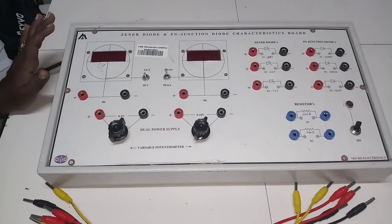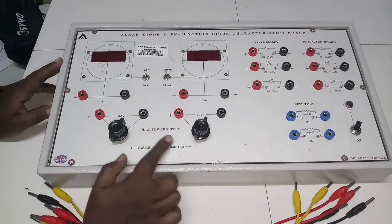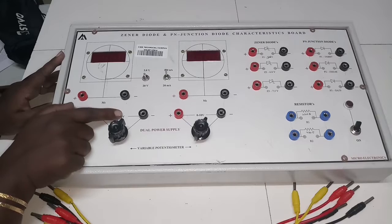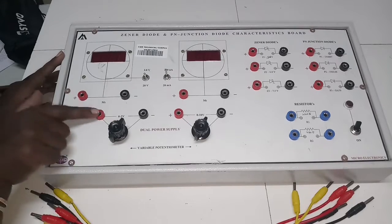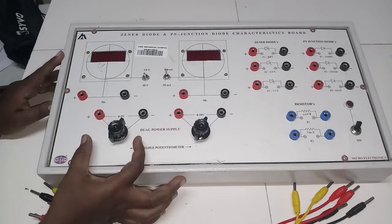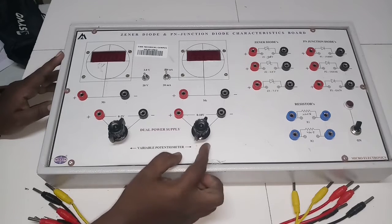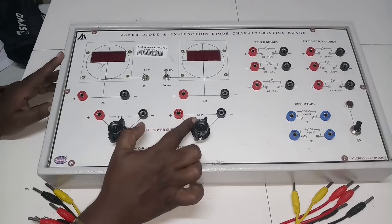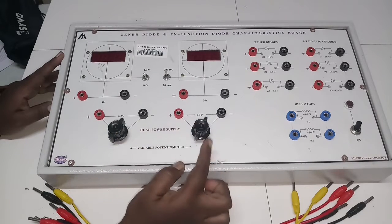Let me explain the things present on this board one by one. We have a variable power supply — in fact two power supplies are provided. The first one is 0 to 2 volt, with positive and negative terminals. The second power supply is 0 to 10 volt, with positive and negative terminals, minimum 0 and maximum 10 volt.